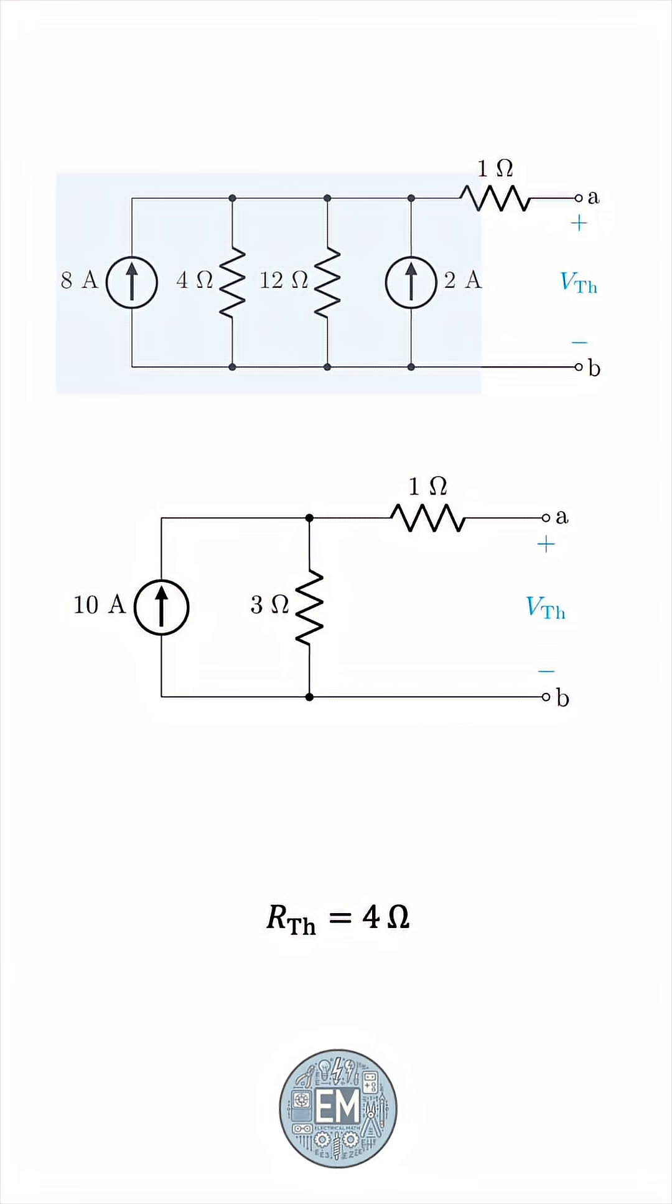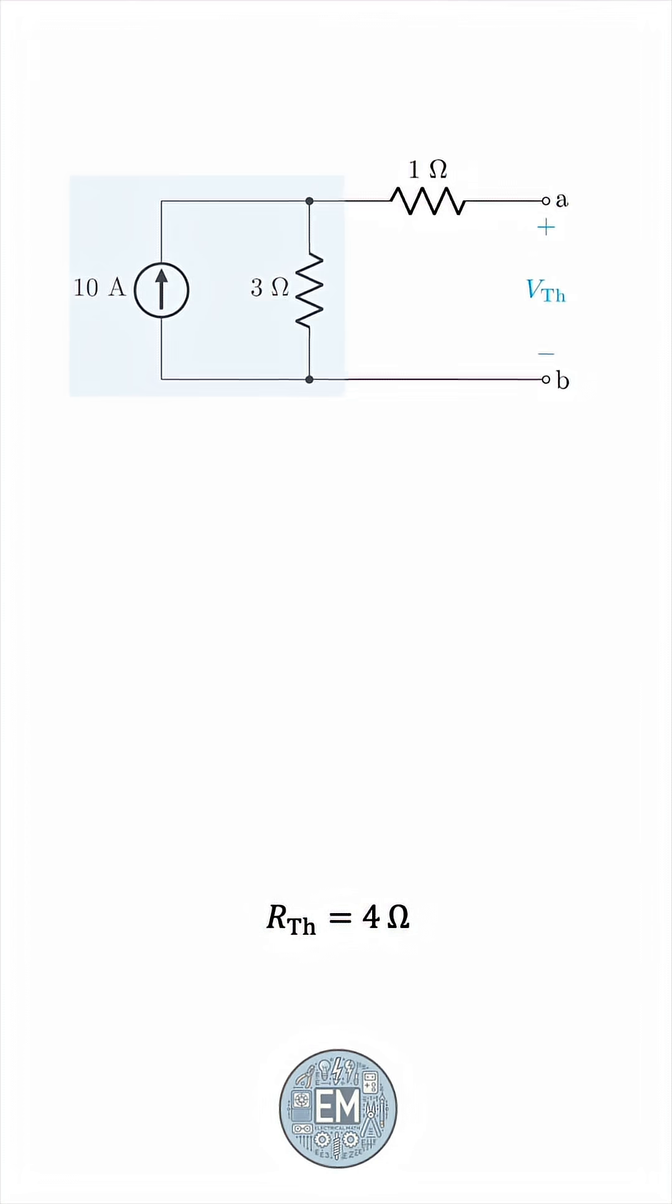Great, and now we can do one more source transformation, and convert this current source in parallel with the resistor into a voltage source. The voltage source would be 10 times 3, which is 30 volts, and the 3 ohm resistor would come in series like this.